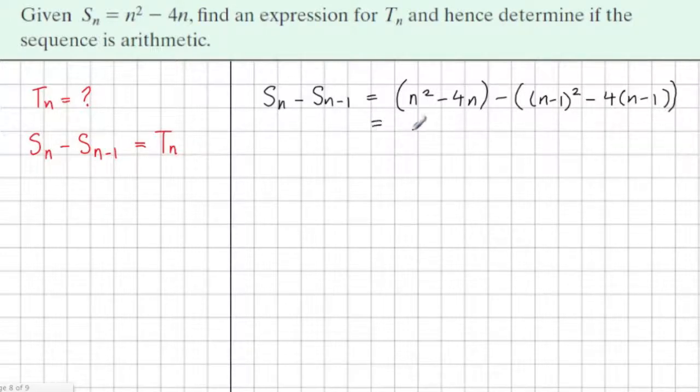So we still have the term n hasn't changed, n squared minus 4n. When we expand the binomial n minus 1 squared, it gives us n squared minus 2n plus 1.